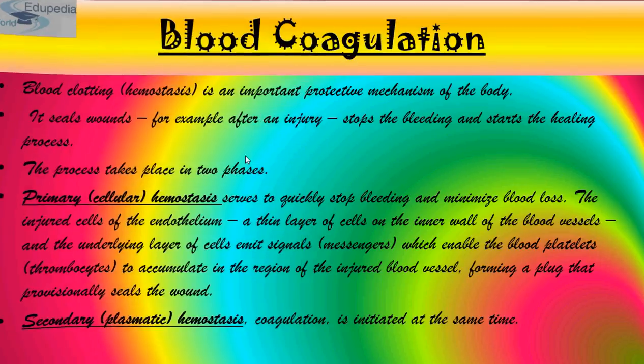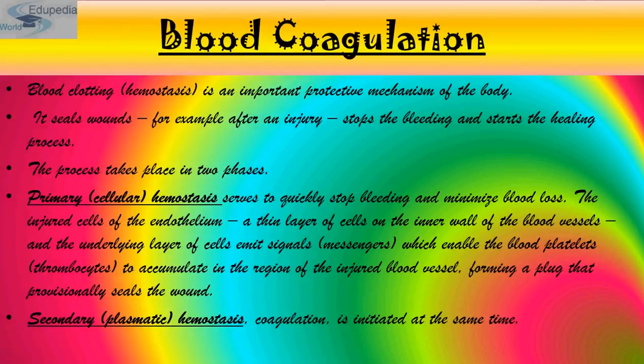Blood coagulation takes place in two phases. The first is primary hemostasis, also known as cellular hemostasis. It serves to quickly stop bleeding and minimize blood loss. The injured cells of the endothelium — a thin layer of cells on the inner wall of the blood vessels — and the underlying layer emit signals which enable blood platelets, i.e. thrombocytes, to accumulate in the region of injured blood vessels, forming a plug that provisionally seals the wound. The secondary phase is plasmatic hemostasis, in which coagulation is initiated at the same time.